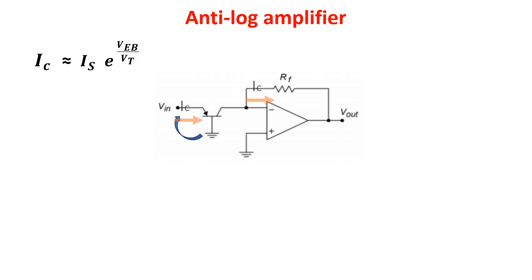The IC current flows into the feedback in this direction. Veb is equal to the input voltage Vin. The output voltage is equal to the opposite of RF times IC. So, the output voltage is this and it is proportional to the power of the input voltage Vin.